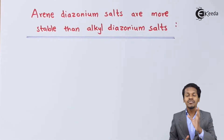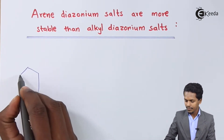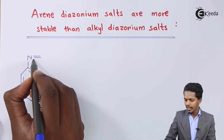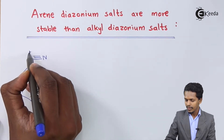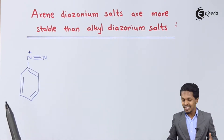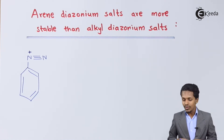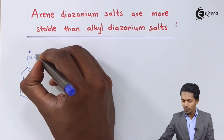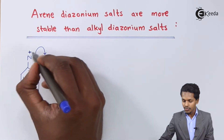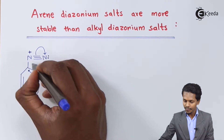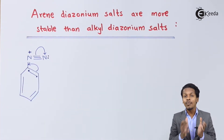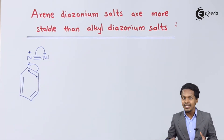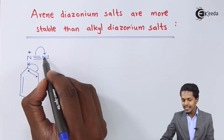Now let me talk about the first thing: the structure of arene diazonium salt. If I consider the structure of diazonium salt, I am representing the diazonium group attached to this benzene ring — this is nothing but an arene. In this case, this nitrogen will obviously have a lone pair of electrons, which makes the nitrogen more negative, and that's the reason electrons will be pulled toward it.